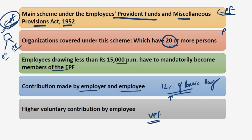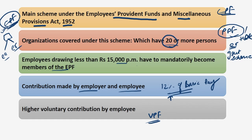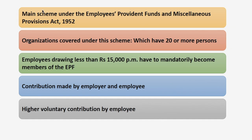Now let's discuss what PPF is and how it is different from EPF. EPF is a deduction from the salaries of individuals by companies with more than 20 employees. Whereas PPF, the Public Provident Fund, is a government scheme that can be opened by resident Indian individuals — either salaried or non-salaried — but it cannot be opened by HUF. HUFs are restricted from opening PPF.